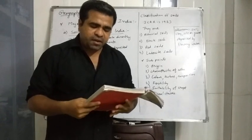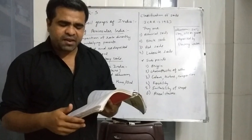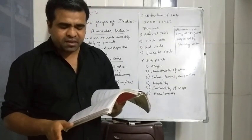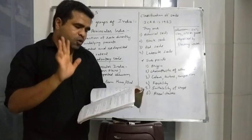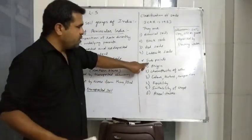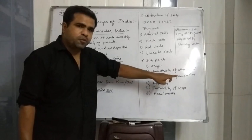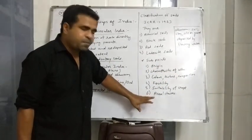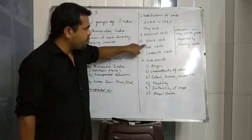For South India, alluvial soil is found in areas of the Deccan coastal strip occupying the deltas of Godavari, Krishna, Kaveri, Narmada, and Tapti rivers, and parts of Odisha. This completes the study of alluvial soil covering origin, characteristics, color, texture, composition, fertility, suitability to crops, and area and state.